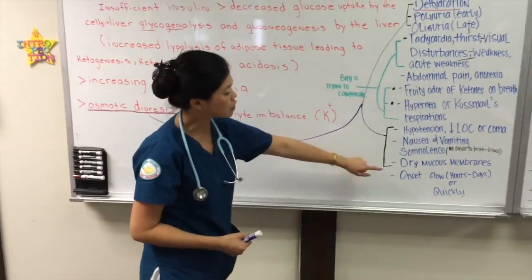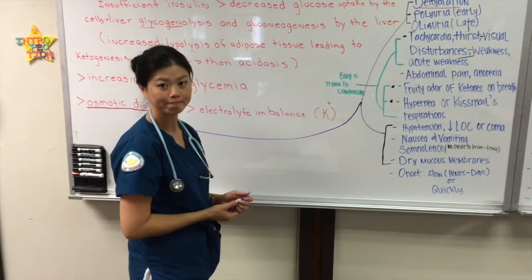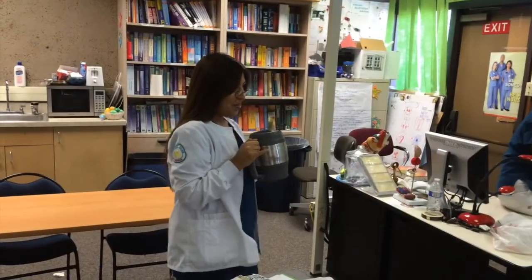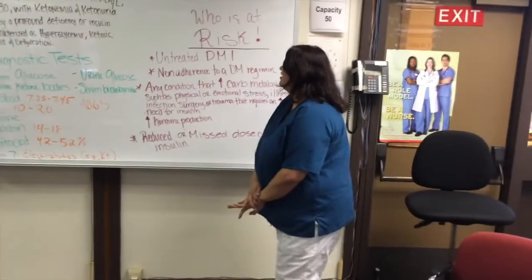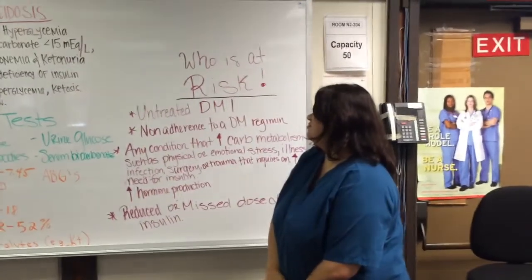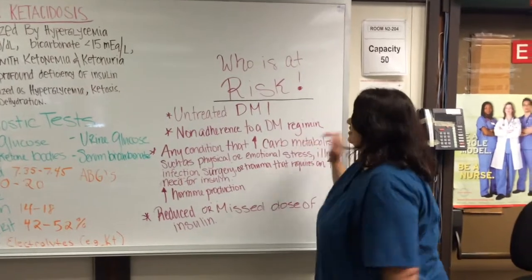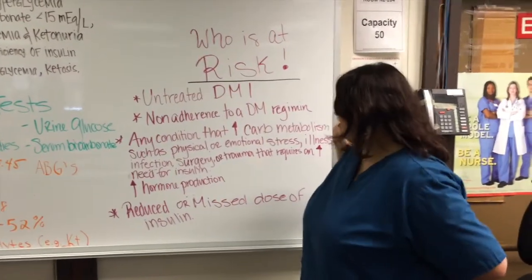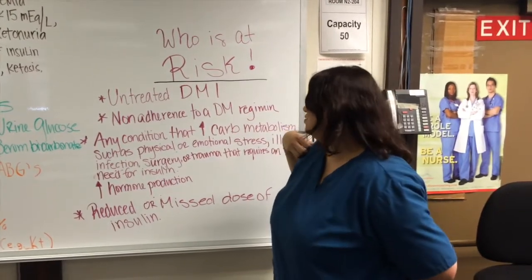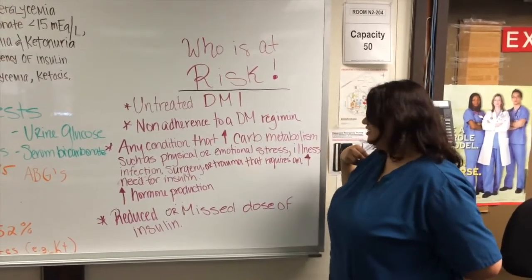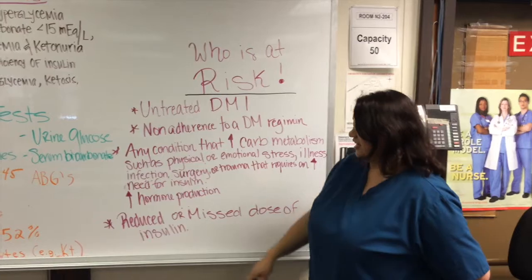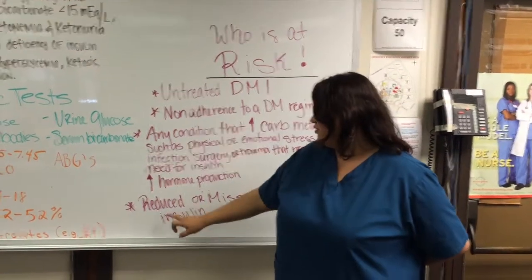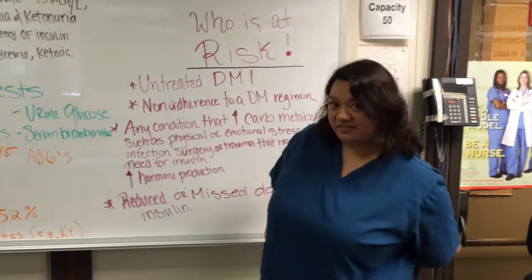The onset typically starts off slow, from hours to days, or can be quick. Crystal, since you're standing right there, who is at risk for DKA? Those that have untreated diabetes, non-adherence to a diabetes regimen, any condition that increases carbohydrate metabolism such as physical or emotional stress, illness, infection, surgery or trauma that requires an increased need for insulin, increased hormone production, and anybody who takes a reduced or missed dose of insulin.